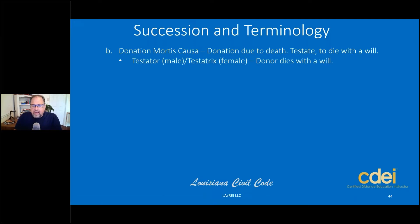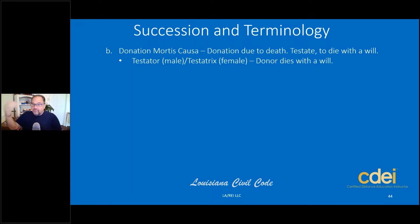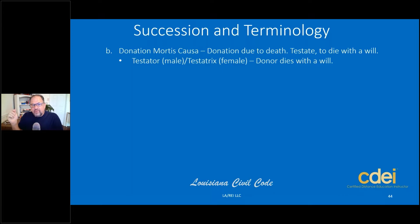Let's look at some terminologies for donation mortis causa. A testator is the male who makes out a will. A testatrix is the female donor who dies with a will. When dealing with donations — even inter vivos — you have a donor and donee. With donation mortis causa, the testator is the male who wrote out the will, and the testatrix is the female who wrote out the will for the property.